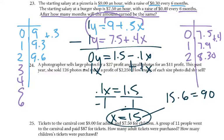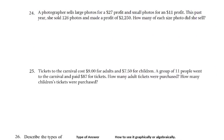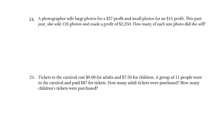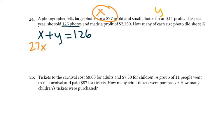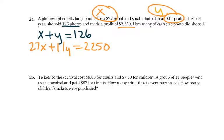Alright, let's look at number 24. A photographer sells large photos for $27 profit and small photos for $11 profit. This past year she sold 126 photos and made a profit of $2,250. How many of each size did she sell? Let's call large x and small y. So x plus y equals 126, and 27x plus 11y equals 2,250. I think substitution would be easier — I could just subtract x from both sides and get y equals 126 minus x.